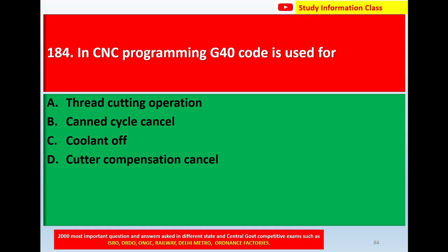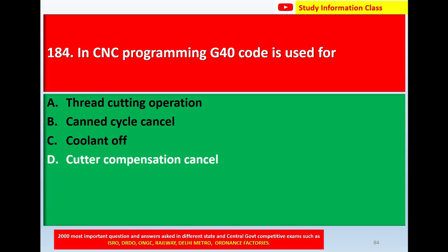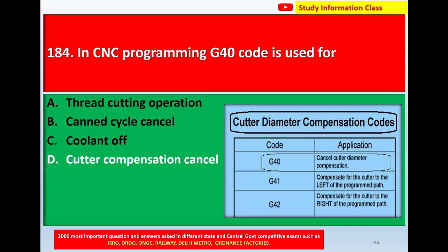Question number 184: In CNC programming, G40 code is used for — option A: thread cutting operation, option B: canned cycle cancel, option C: coolant off, option D: cutter compensation cancel. The correct answer is option D: cutter compensation cancel.